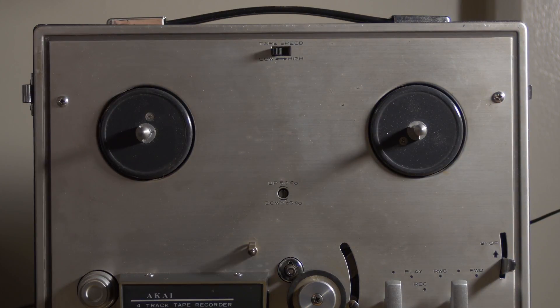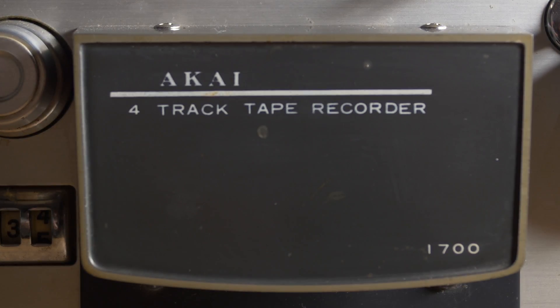This is an Akai 1700 reel-to-reel tape machine. I recently purchased it locally for around $75. It is a four-track machine, meaning that it can have either two stereo tracks or four mono tracks.